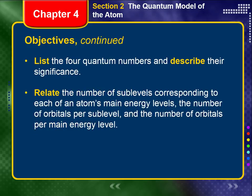List the four quantum numbers and describe their significance — and when I say significance, I don't mean to say that they are important; I want you to describe what they signify. And lastly, you're going to be studying this off of some charts and trying to figure out patterns: relate the number of sublevels corresponding to each of the atom's main energy levels, the number of orbitals per sublevel, and then the number of orbitals per main energy level.